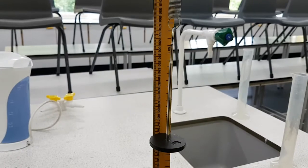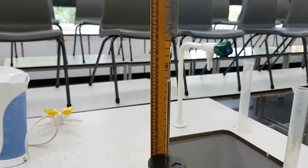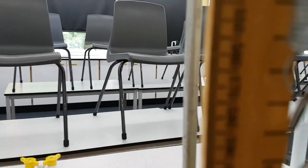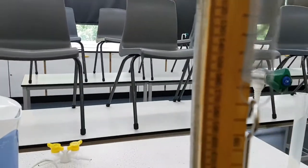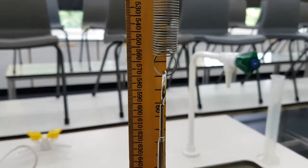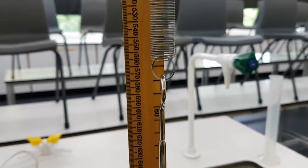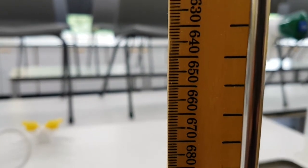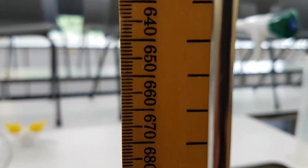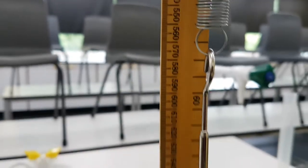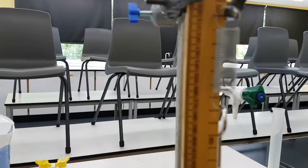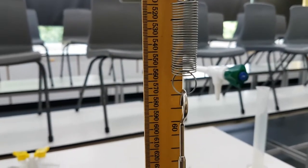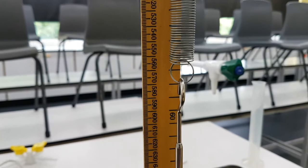Then you're going to add your 100 gram mass and see how much it extends by. If my zero was 530, let me just zoom in. I'm looking at eye level, it's now gone to 556. You need to write down what it went to and then write down the extension, which is the difference between the two.